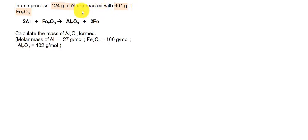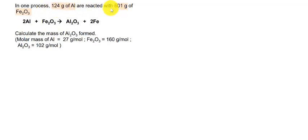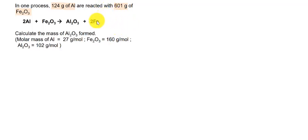So the way to know is when you are given more than one reactant. In this case we have aluminium and also Fe₂O₃ as our reactants — we have more than one reactant. And also these two reactants, they have a given mass, so we know the amount of each reactant used. In this case, it is compulsory for you to find the limiting reactant, because the limiting reactant will limit the product and is also completely consumed in the reaction.